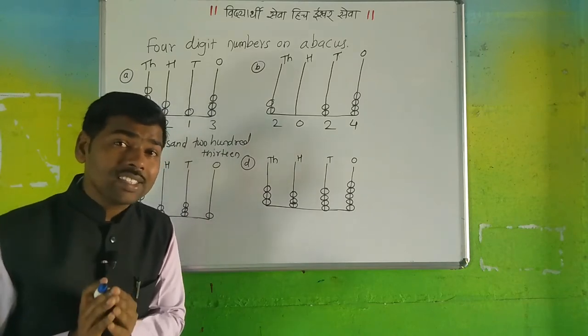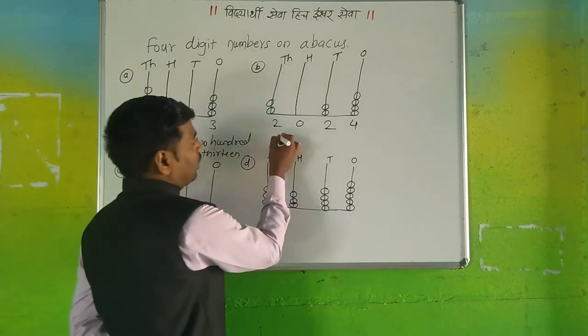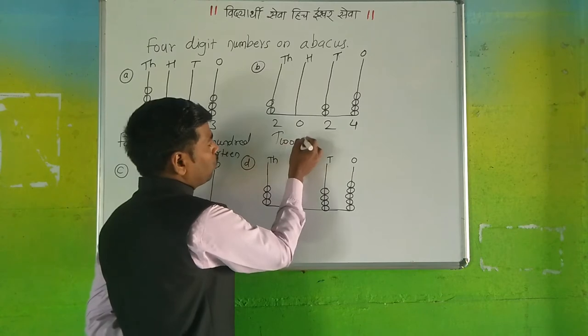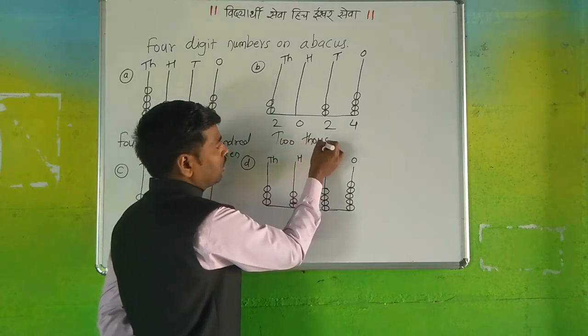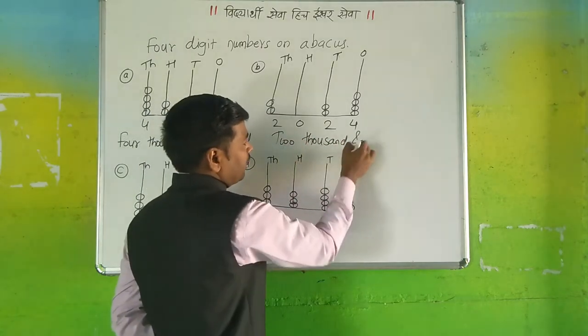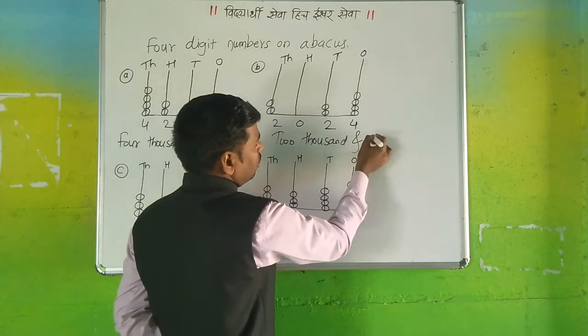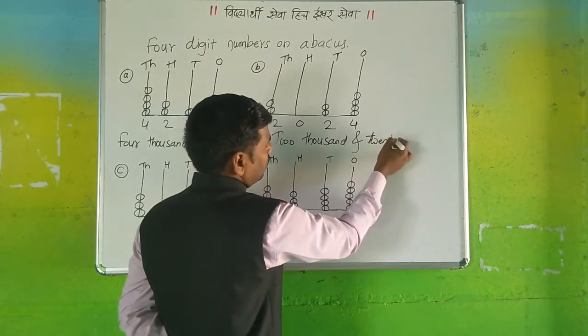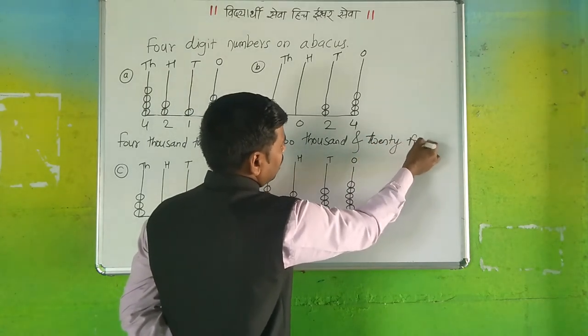What is this? Two thousand and twenty-four. Let's write this: two thousand and twenty-four. Got it?